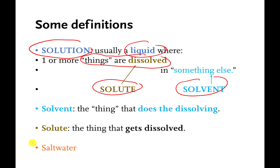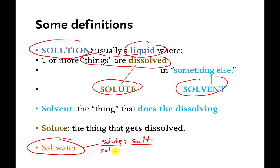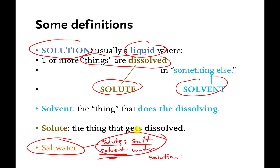So if I told you that you had a salt water solution and I said, what's the solute? — you can pause and think about that. Unpausing: that would be the salt, because that's the stuff that's dissolved. If I said, what's the solvent? — that would be the water. And if I asked, what's the solution? — it's both of those things mixed together. All right, you need to know that.